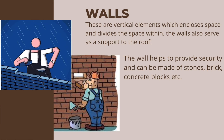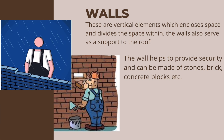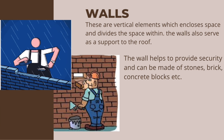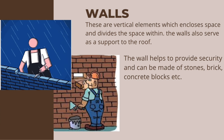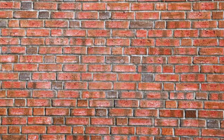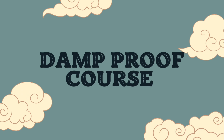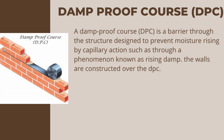Walls are vertical elements which enclose space and divide the space within. Walls also serve as support to the roof, help to provide security, and can be made of stones, brick, concrete blocks, etc. Damp proof course (DPC) is a barrier through the structure designed to prevent moisture rising by capillary action, through a phenomenon known as rising damp. The walls are constructed over the DPC.